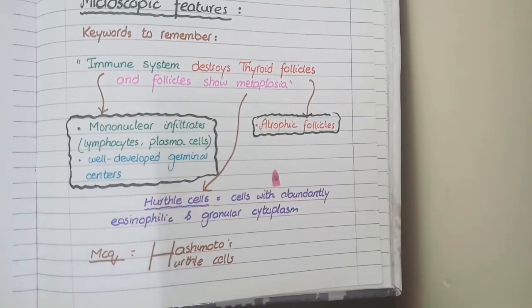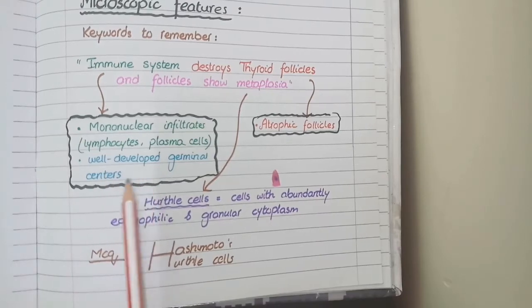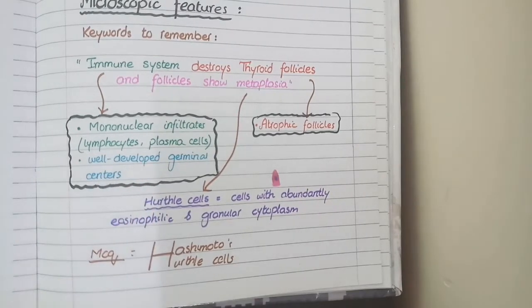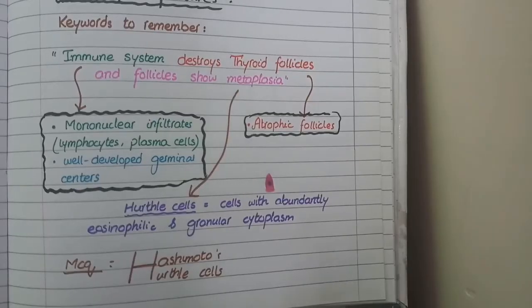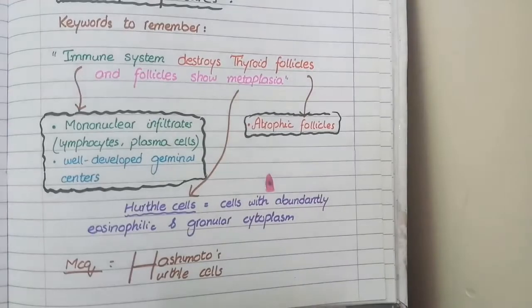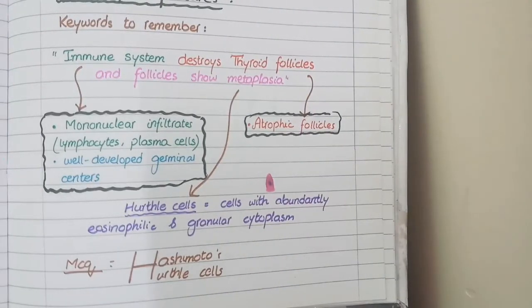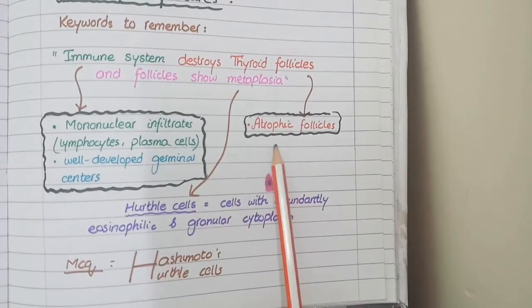The immune system manifests as infiltration of mononuclear cells — that are lymphocytes and plasma cells. These inflammatory cells also form germinal centers, which are an indicator of their proliferation. The second keyword was 'destroy thyroid follicles,' and this is manifested as atrophic follicles.